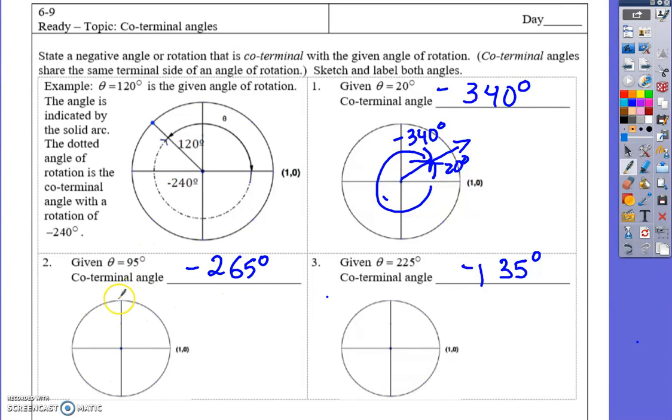95 degrees is just in the second quadrant, so that's where you should be going. And 225 is halfway through the third quadrant, so here and here.